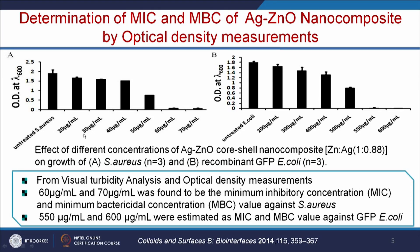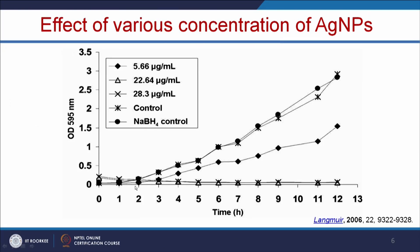The next slide shows the effect of various nanoparticle concentrations with respect to different time points. In the control with no nanomaterial, growth gradually increases. In the nanoparticle preparation, sodium borohydride was used as a reducing agent—since the reducing agent alone is not toxic, growth similar to control is observed. At low concentration (5.66), growth gradually decreases. At the MIC or MBC concentration, growth is completely inhibited.